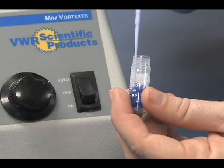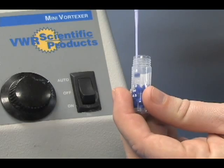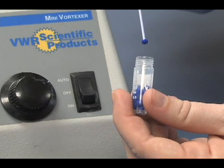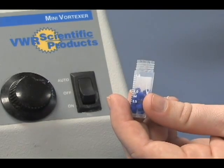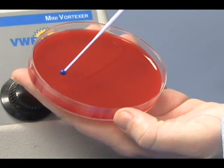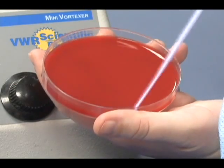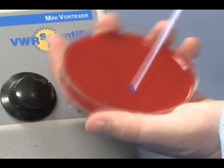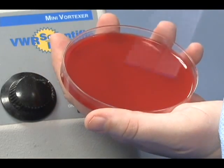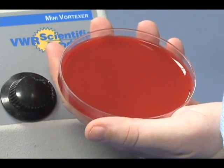To recover the organisms using the bead method, aseptically remove the cap and insert an inoculating needle into the hole of one of the beads. Streak the plate by rolling the bead on the solid medium. Immediately recap and place the vial in the freezer before it thaws.